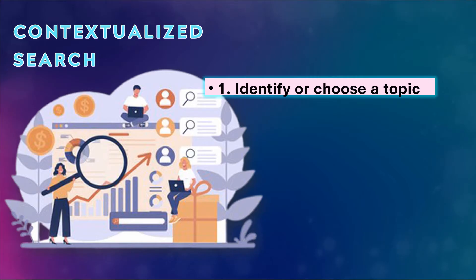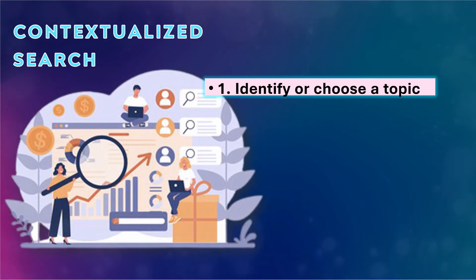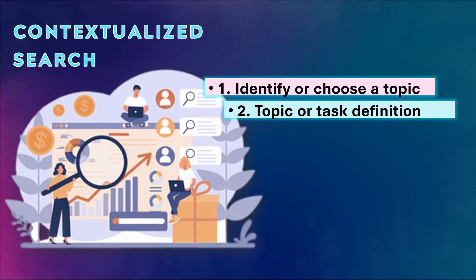Number one is to identify or choose a topic. If the topic is not provided and you are free to choose the content, choose something you are interested in or new ideas. If a topic is provided, make an initial search of the subject, usually with the help of Google or Wikipedia.